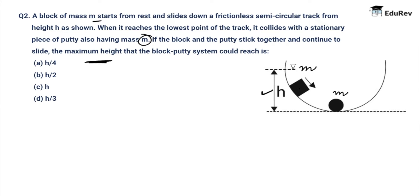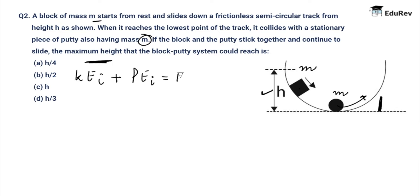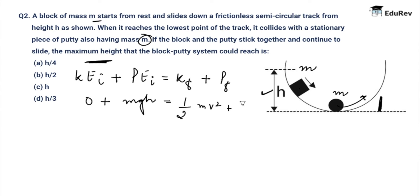When the block slides down and collides with the putty, we need to find the maximum height the combined system attains. The velocity of the block just before hitting the putty can be found by energy conservation: kinetic energy initial plus potential energy initial equals kinetic energy final plus potential energy final. Substituting, MGH equals half MV squared, so V equals under root of 2GH.